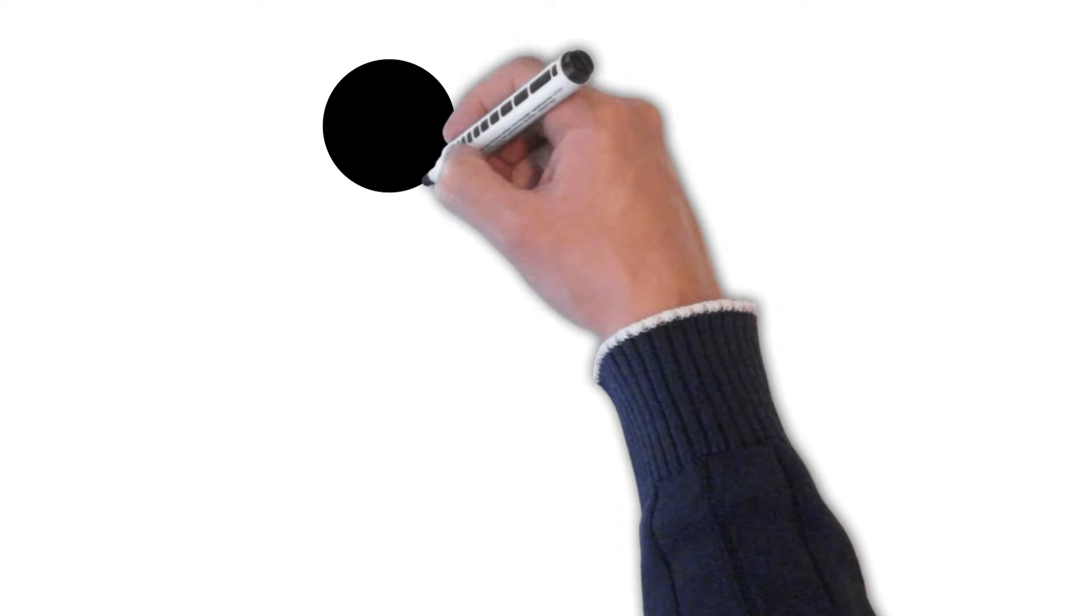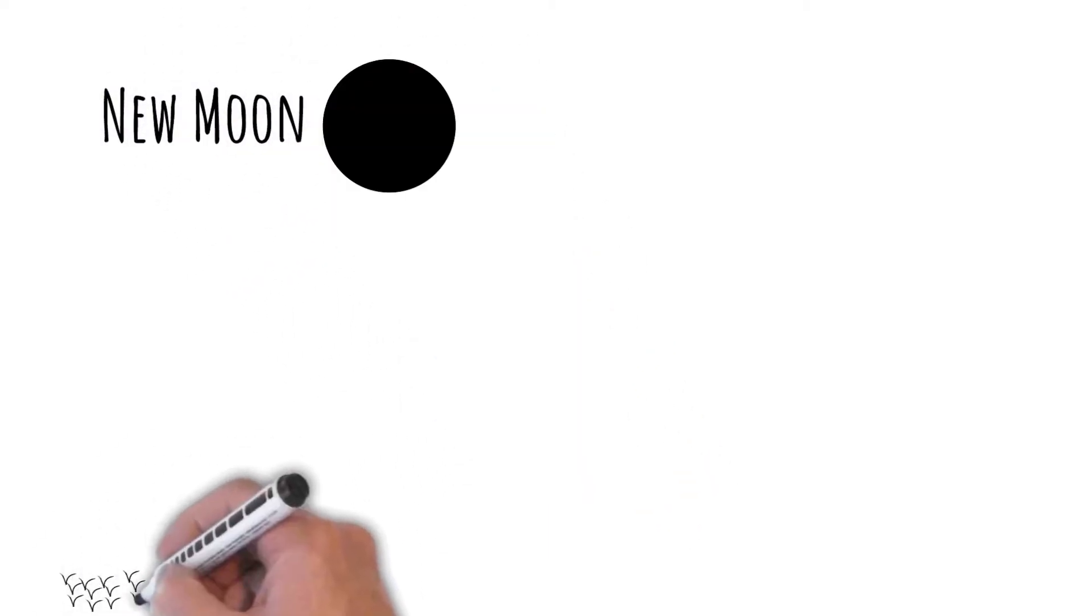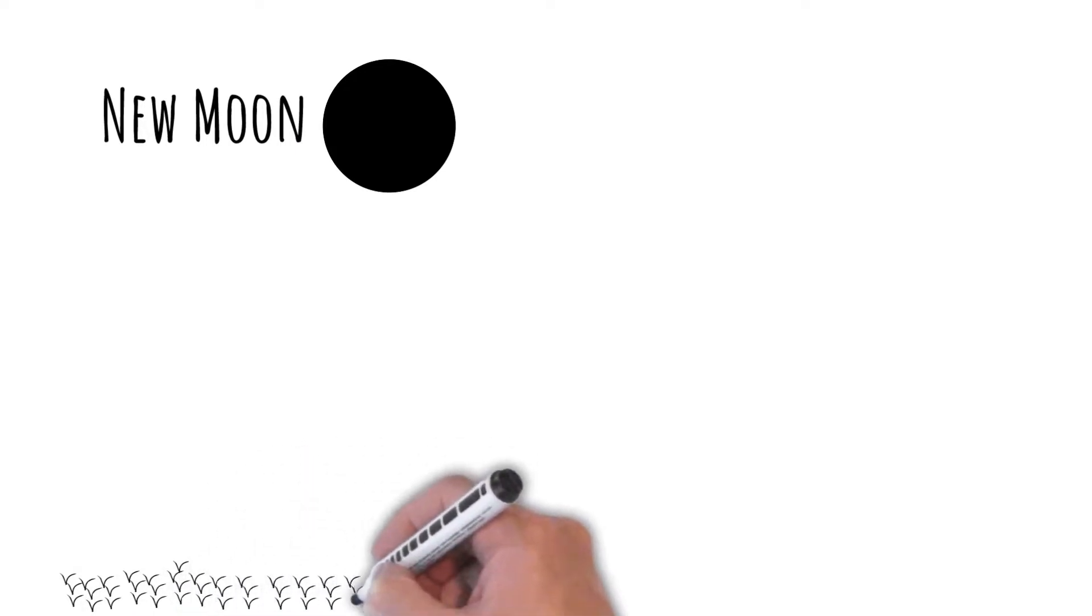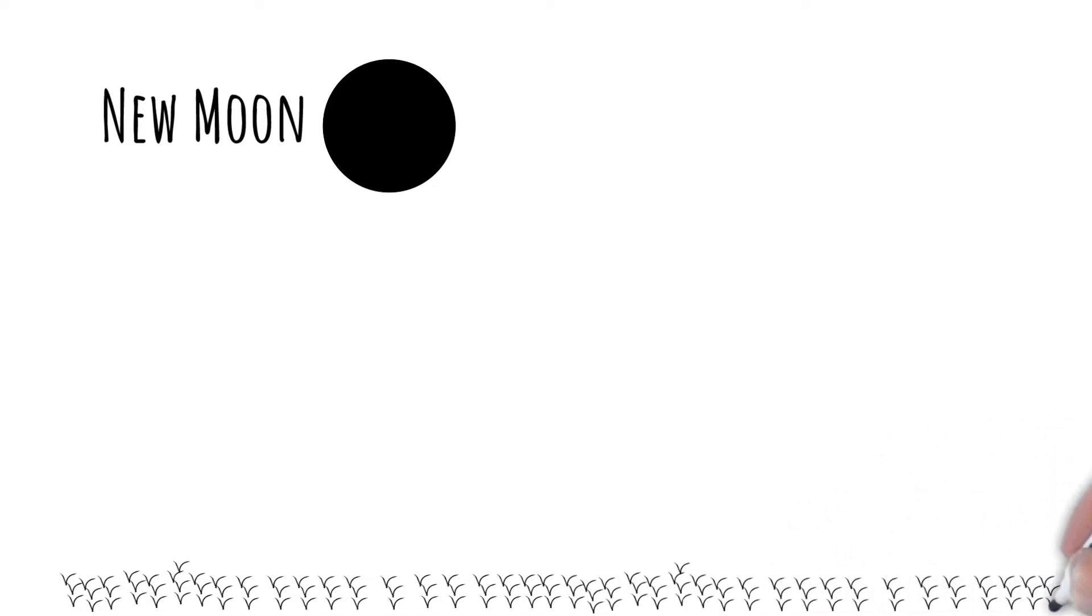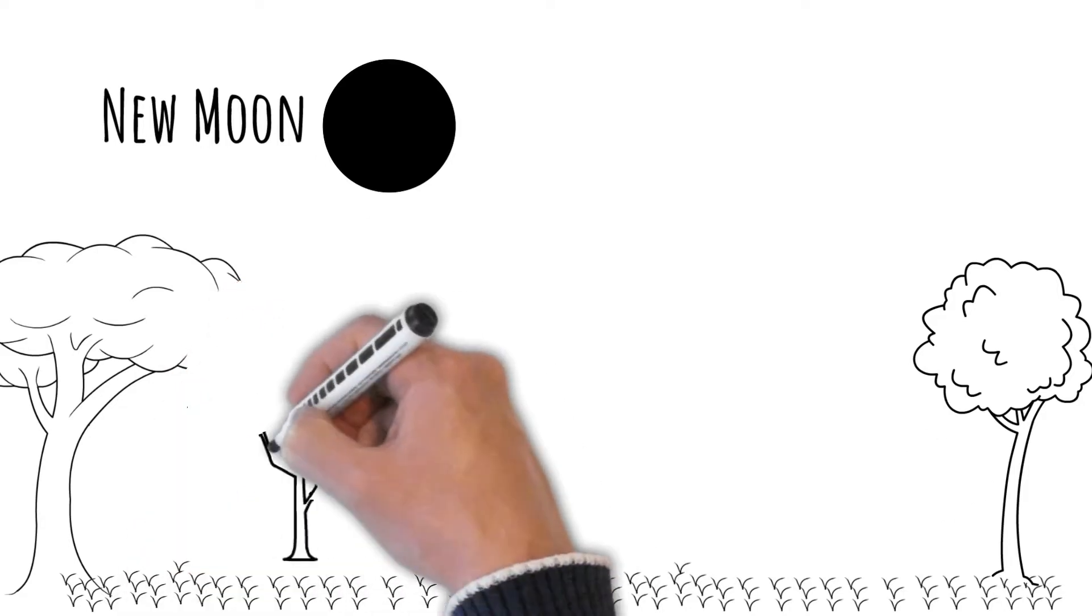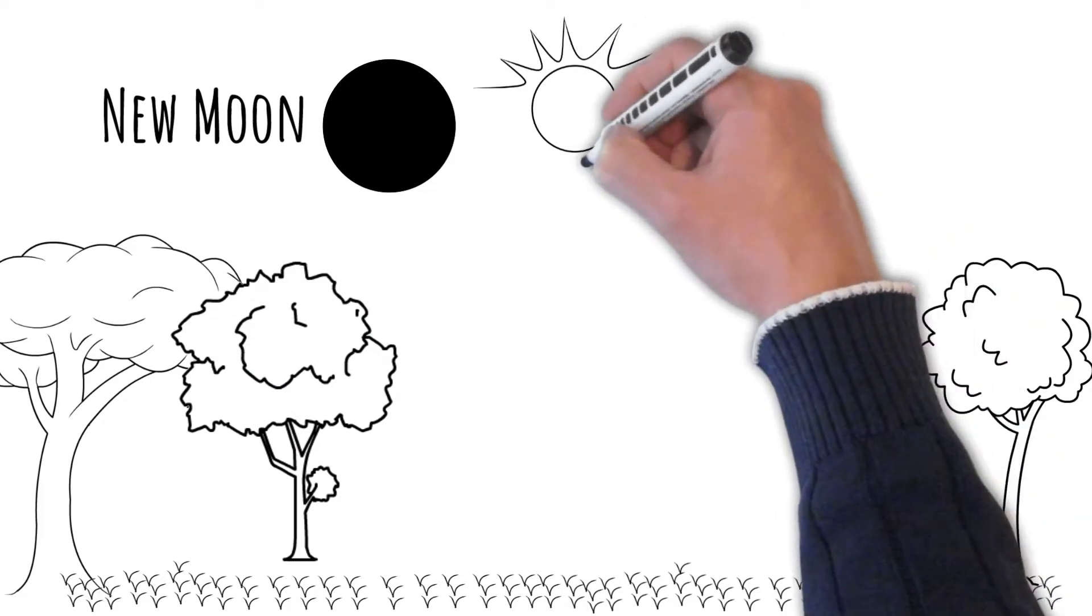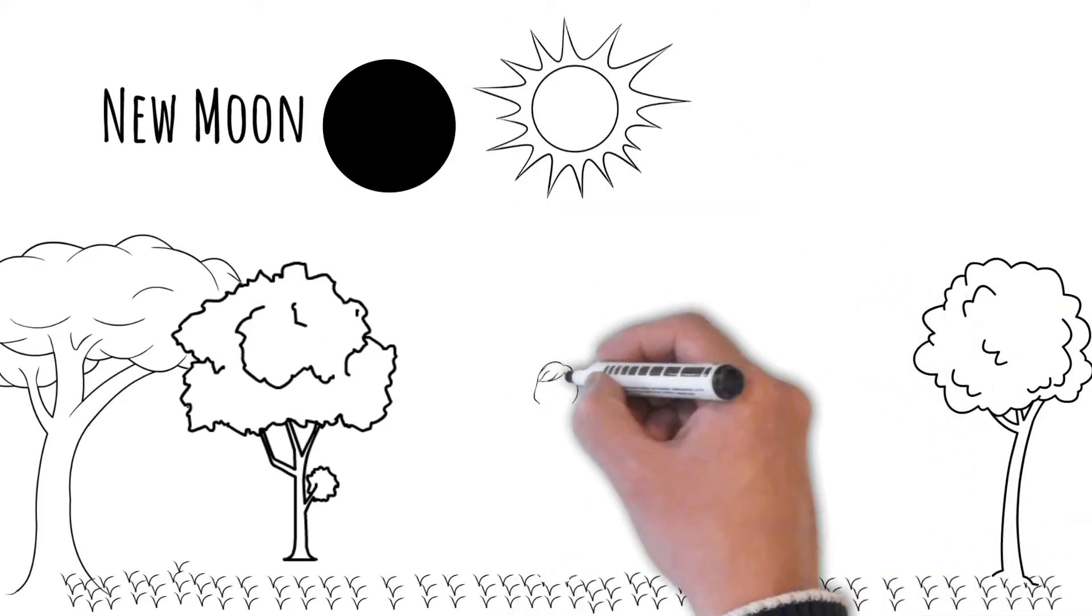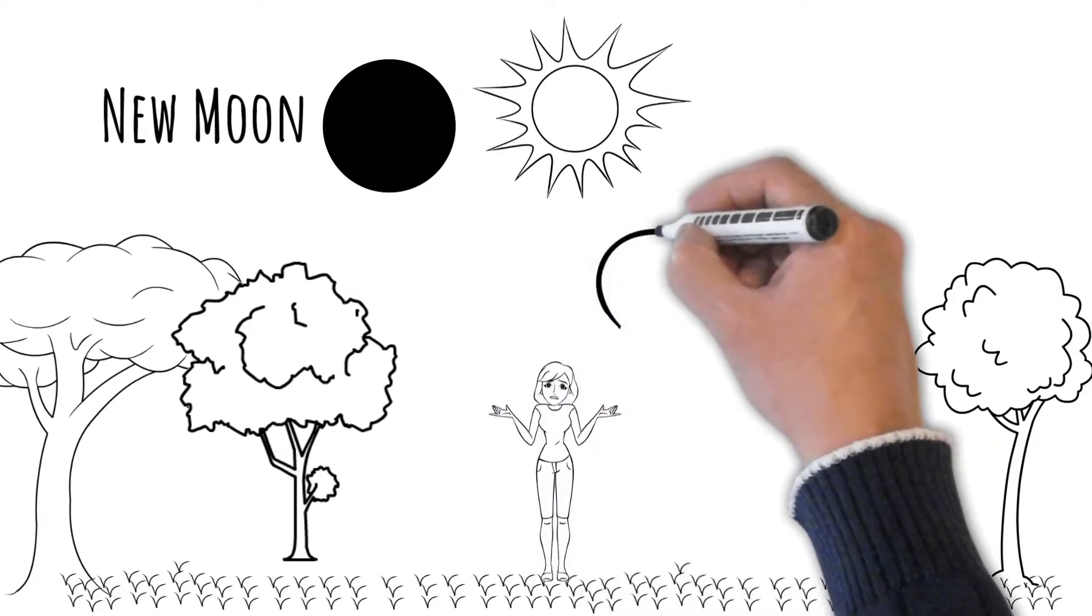First is the new moon. This is the invisible looking phase of the moon with the illuminated side of the moon facing towards the sun and the dark side of the moon facing completely towards us. The moon is still there, we just can't see it because there is no light shining off the part that is facing us. In this phase, the moon is in the same part of the sky as the sun and actually rises and sets with the sun.